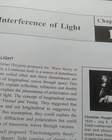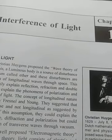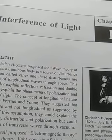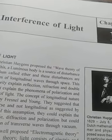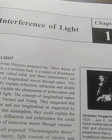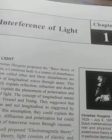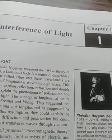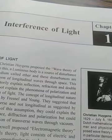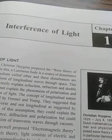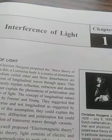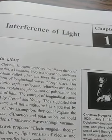The points where maximum intensity is observed are known as constructive interference, and points where minimum intensity is observed are known as destructive interference. If the path difference is equal to 0, lambda, 2 lambda, 3 lambda, or n lambda, then we have constructive interference.